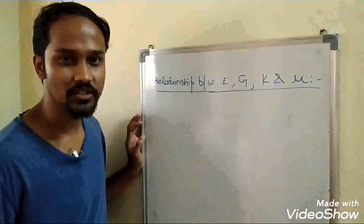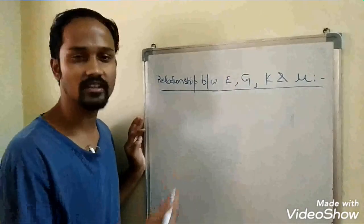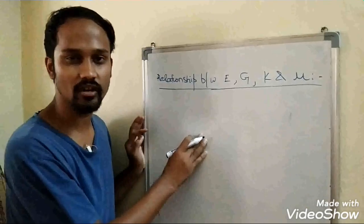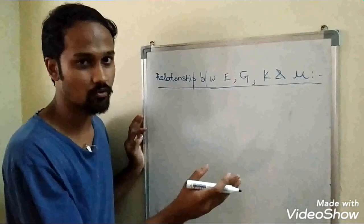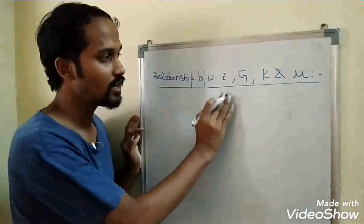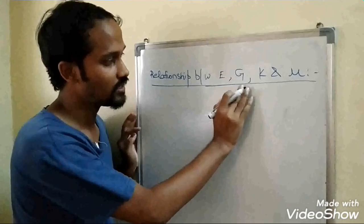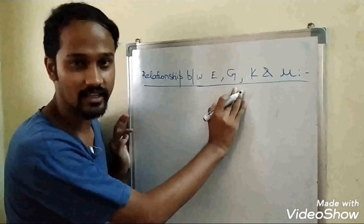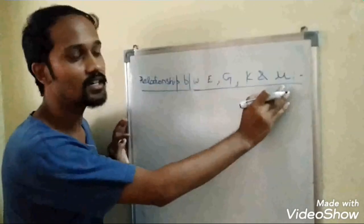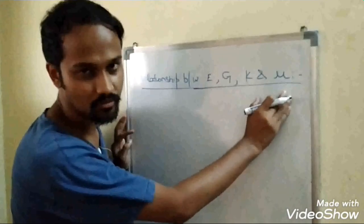Hi everyone. Today we are going to make the second video, and this video will be based on the relationship between Young's modulus (E), Rigidity modulus (G), Bulk modulus (K), and Poisson's ratio (Mu).